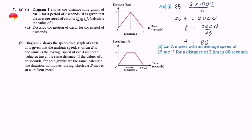This part represents the duration during which the car moves at uniform speed — I label it as T. From the question, the uniform speed V of car B is the same as the average speed of car A, so V equals 25 metres per second. The value of T in seconds for both graphs is the same, and we already found T equals 80.